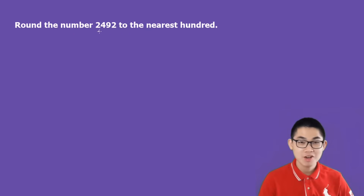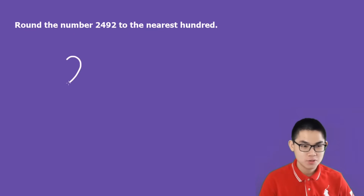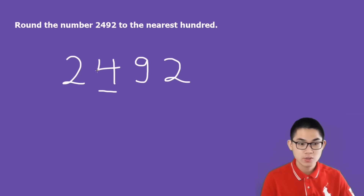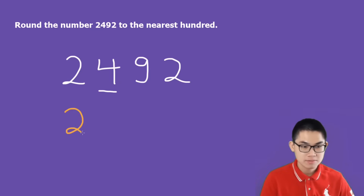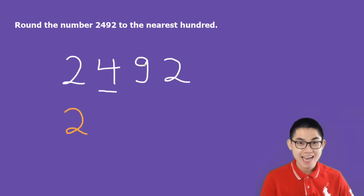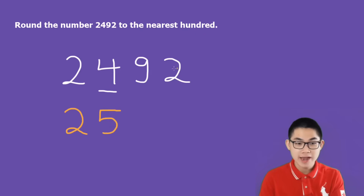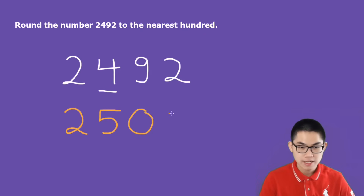How about 2,492 to the nearest hundred? So we have 2,492. This is the ones place, this is the tens place, and this is the hundreds place. So we want to round number 4. All the numbers to the left of 4, we just copy them down. How about 4? Well, you guessed it — 9 is larger than 5, so we have to increment number 4 to number 5. And then all the numbers to the right of 4, we turn them into zeros.